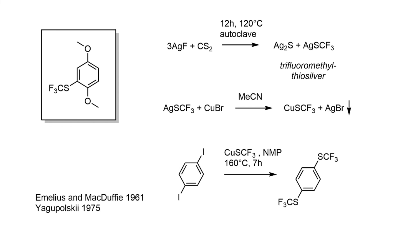Later in 1975, Jagopolski did a metathesis reaction, taking the silver salt and reacting it with copper bromide in acetonitrile to form trifluoromethylthiocopper. Copper(I) again turns up — this time for the SCF3 group. This reagent was competent in transforming aryl iodides, albeit under fairly harsh conditions: prolonged heating at high temperatures in NMP. Regardless, he was able to convert aryl iodides into the corresponding trifluoromethylthio aryl compounds.